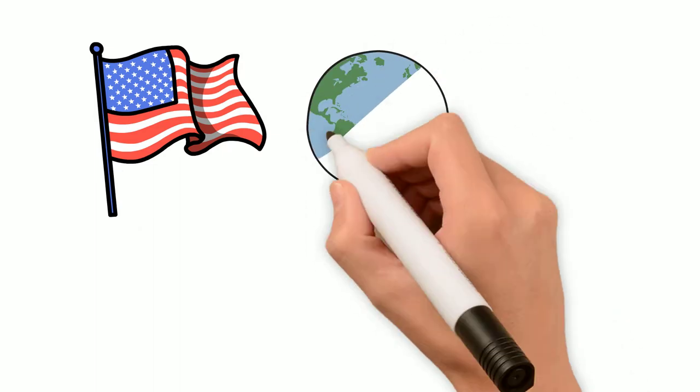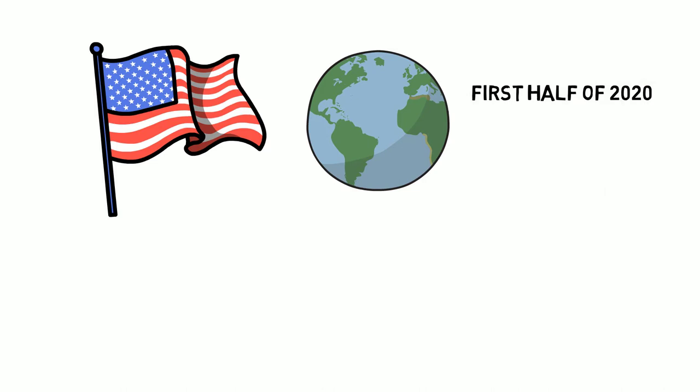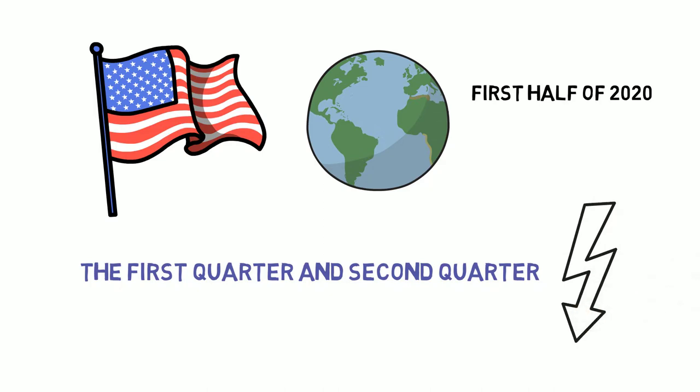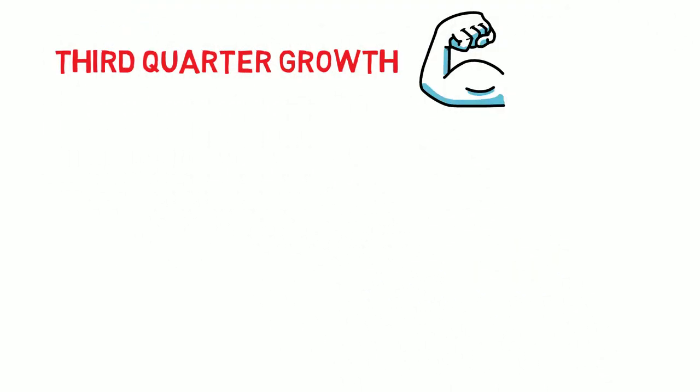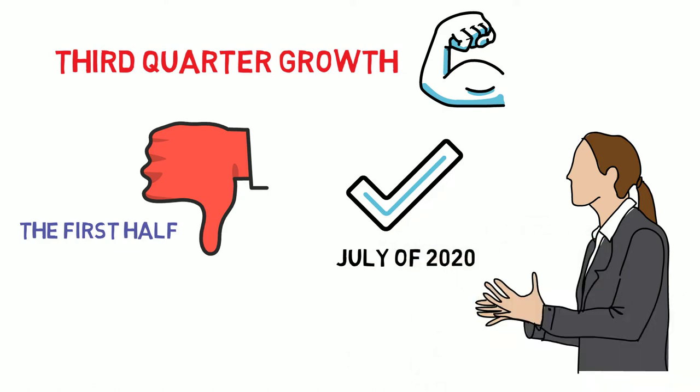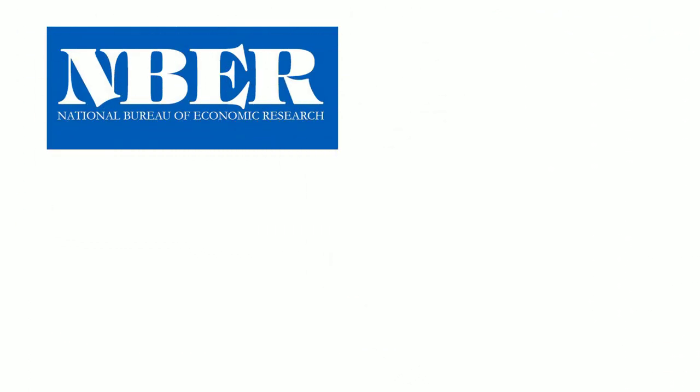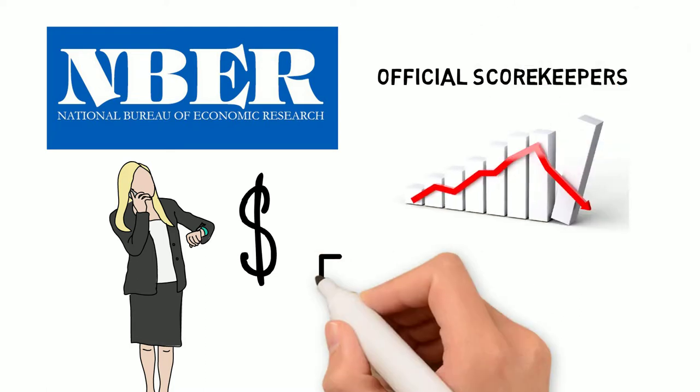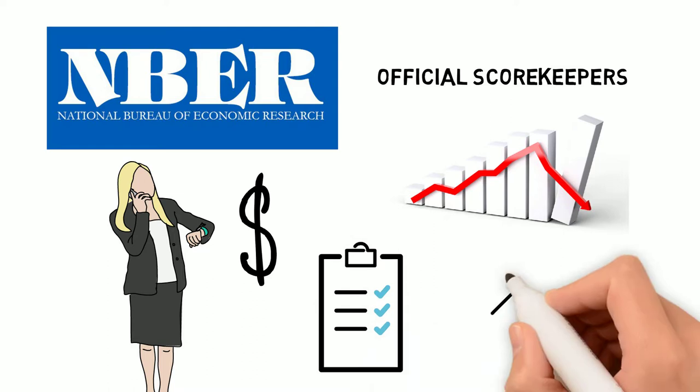Of course, we had a recession, at least in the United States and probably most of the world in the first half of 2020. The first quarter and second quarter were both down, and there's the recession. So the third quarter growth was quite strong. It didn't come all the way back compared to what was lost in the first half, but it was quite strong. So you could argue that the first recession was over by July of 2020. We have a group in the United States called the National Bureau of Economic Research. It's a private group of economists, but they are the official scorekeepers for recessions. They did declare the recession started in the first quarter.